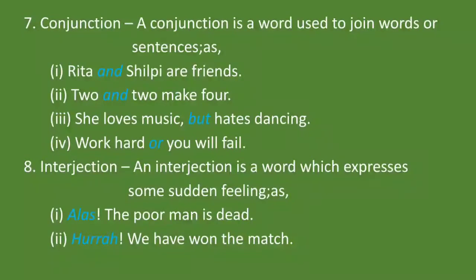Conjunction: A conjunction is a word used to join words or sentences. शब्दों या वाक्यों को जोड़ने वाले शब्द को conjunction कहते हैं. जैसे, Rita and Shilpi are friends. यहाँ and conjunction है क्योंकि यह Rita और Shilpi दो शब्दों को जोड़ रहा है. Two and two make four. यहाँ and conjunction है. She loves music but hates dancing. यहाँ but conjunction है क्योंकि यह दो sentences को जोड़ रहा है. Work hard or you will fail. यहाँ or conjunction है क्योंकि यह दोनों sentences को जोड़ रहा है.